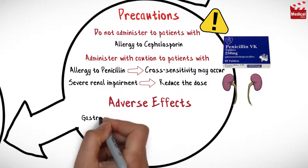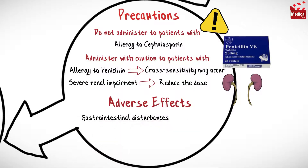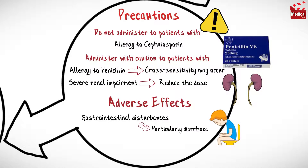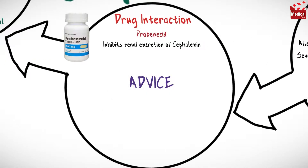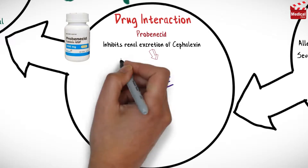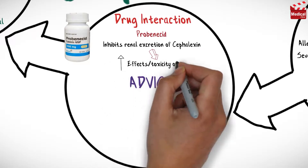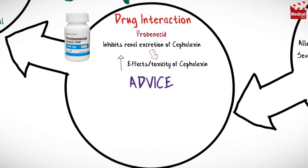This antibiotic may cause gastrointestinal disturbances, particularly diarrhea, and it may also cause allergic reactions such as skin eruption, fever, and pruritus. Probenecid inhibits renal excretion of cephalexin, which increases the effects and toxicity of it.